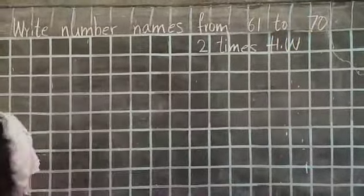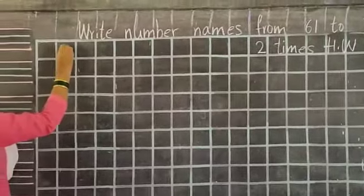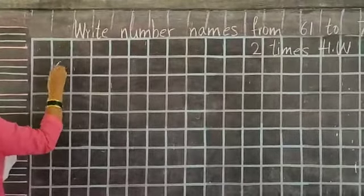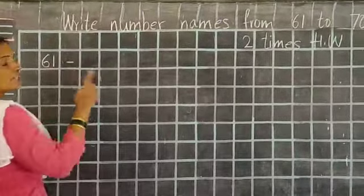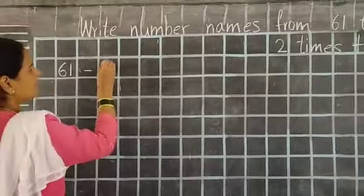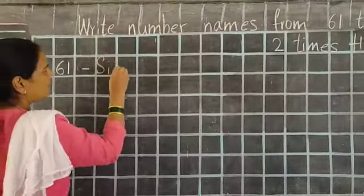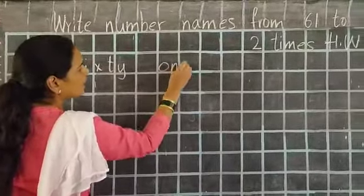Today we are going to write numbers from 61 to 70. See here, this is the first box, second box. Write 61. Capital S, S-I-X-T-Y, sixty. Leave a box. O-N-E, one. 61.